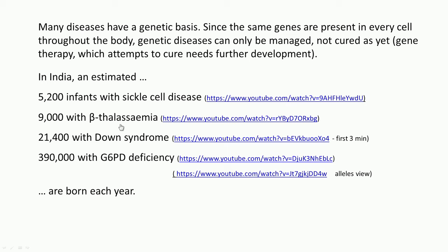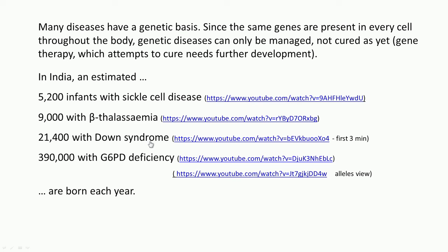You could also look at an optional video on thalassemia — especially beta thalassemia and alpha thalassemia. For Down syndrome, I would suggest watching the first three minutes of the recommended video, which gives a very nice overview of its genetic basis and an introduction to Down syndrome.